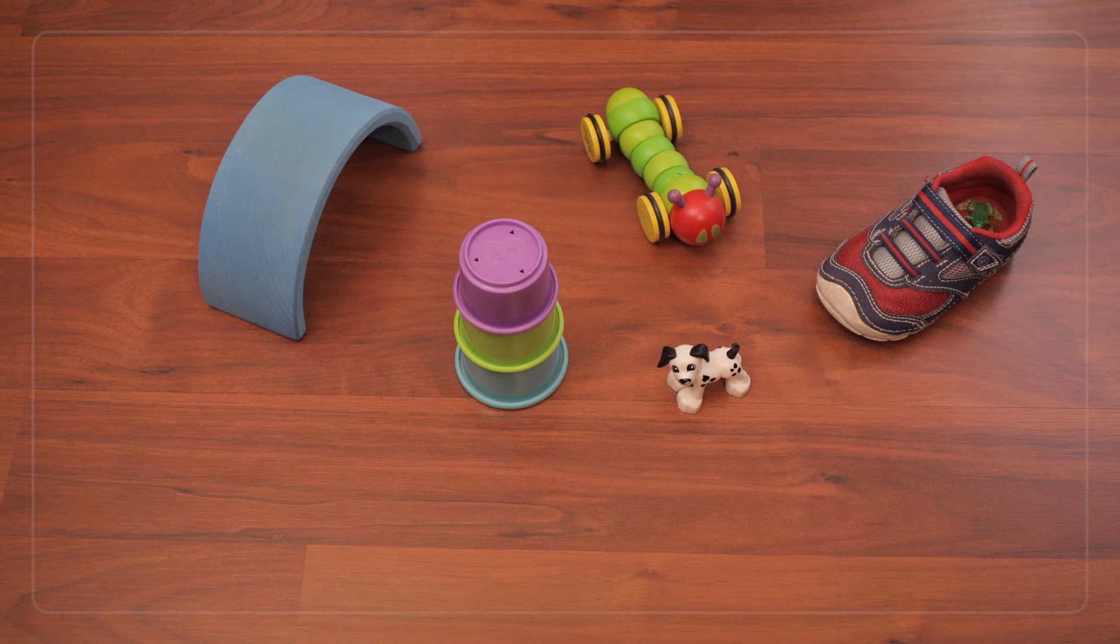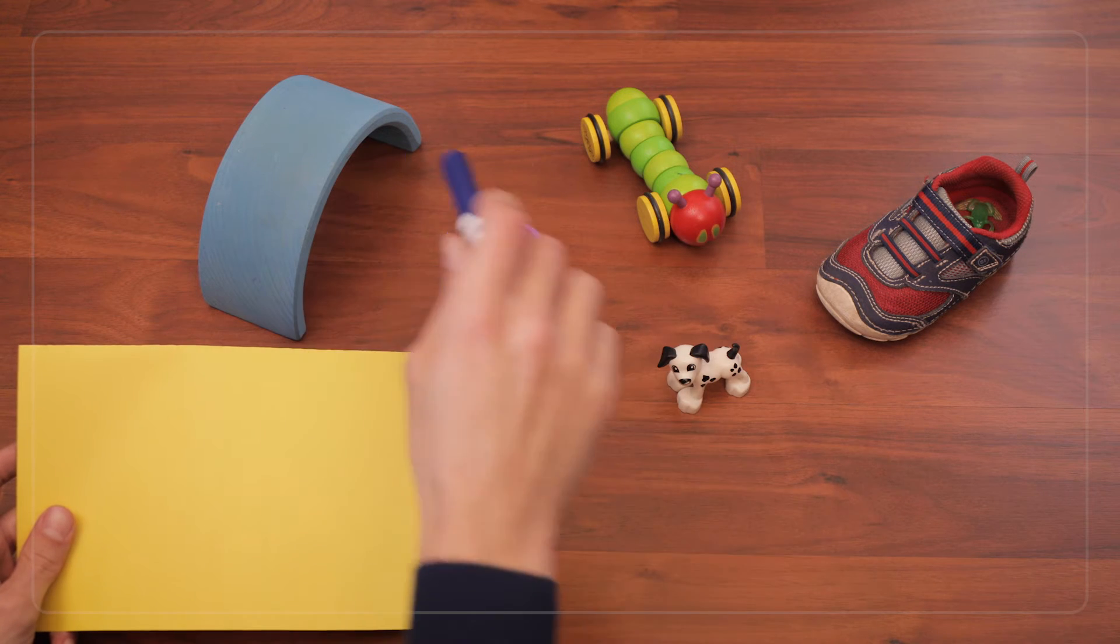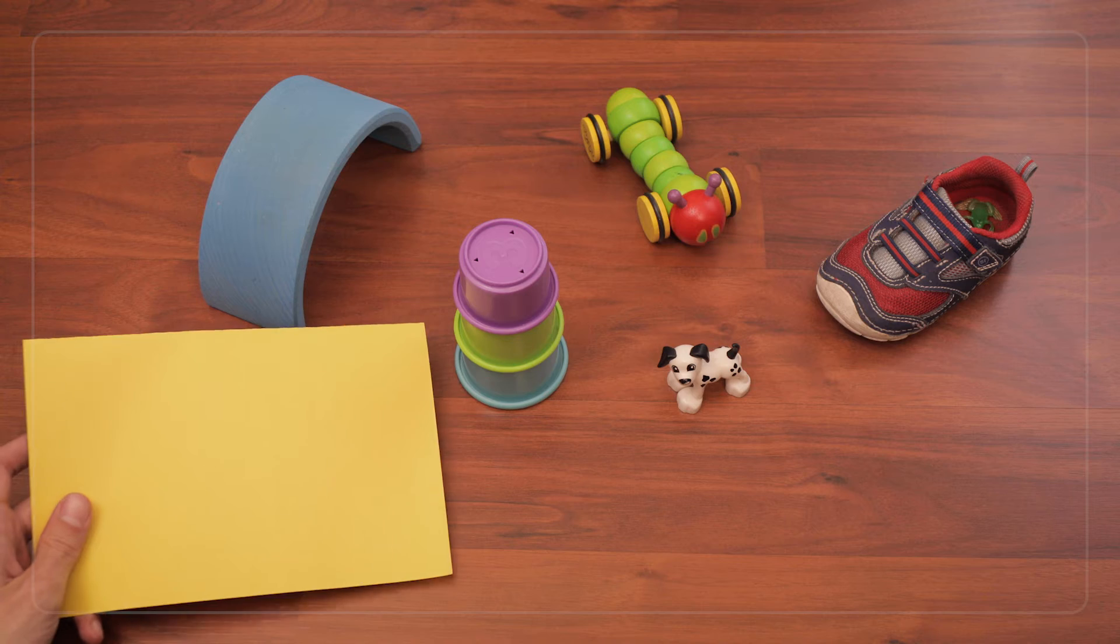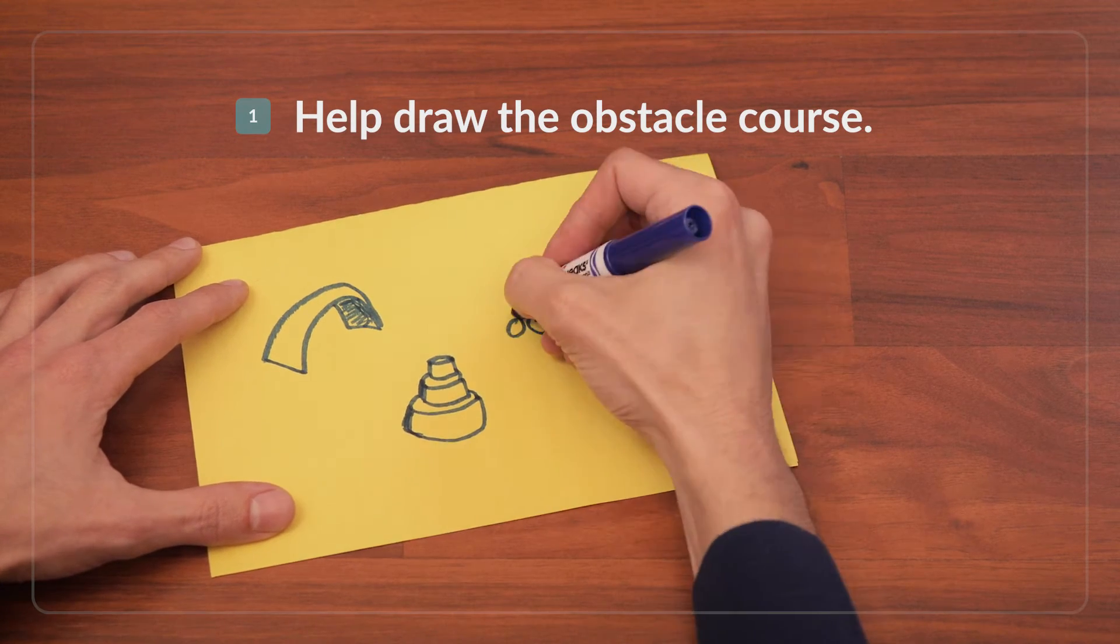To get started with this part, you can say, you finished the obstacle course. Now we're going to draw a map of the obstacle course and use it to help us walk through the course one last time. Children may be ready to draw their own map, but if not, give them as much help as they need or you can even do the drawing in this portion of the game.